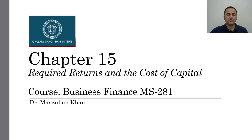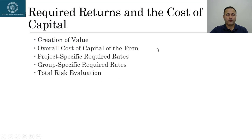We have covered most of the contents and chapter number 15 will be the last chapter that we'll be covering from this book. For the remainder, I will give you different articles and in those topics we will cover about Islamic modes of financing. So in this chapter, which is required returns and the cost of capital, we will talk about value creation and the overall cost of the firm, also called WACC — weighted average cost of capital. Then we will talk about project specific required returns, growth specific required rates, and total risk evaluation.